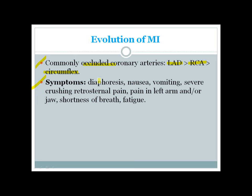Common symptoms of MI include diaphoresis, nausea and vomiting — due to parasympathetic or sympathetic overactivity. The most important symptom is severe crushing or squeezing substernal or retrosternal pain, which can radiate to the left arm, jaw, head, or epigastrium. There can also be shortness of breath and fatigue.